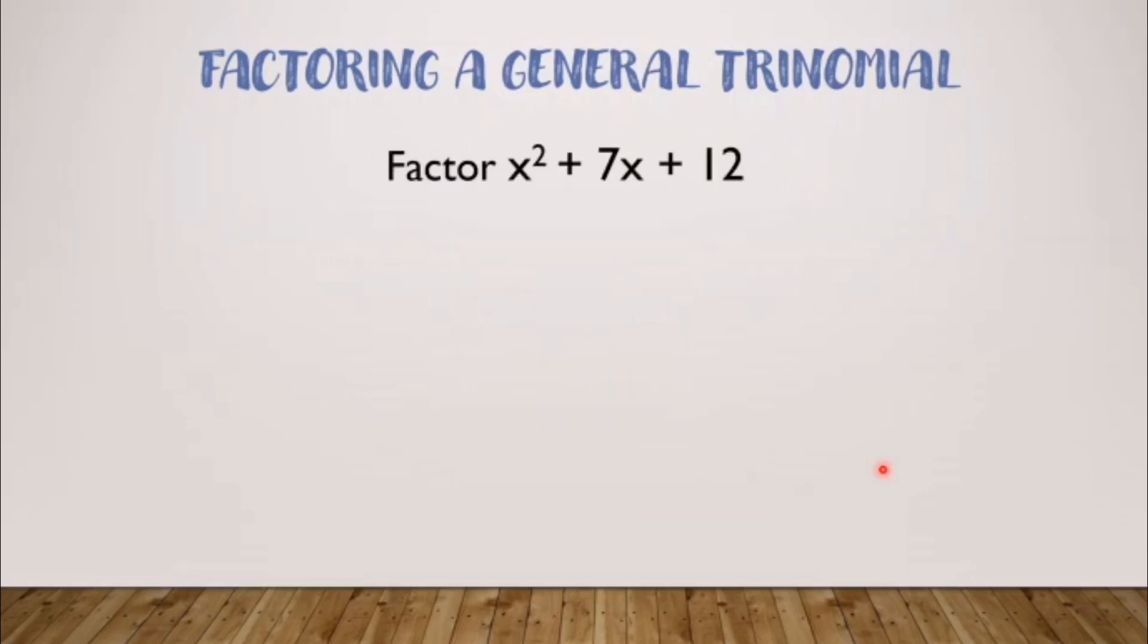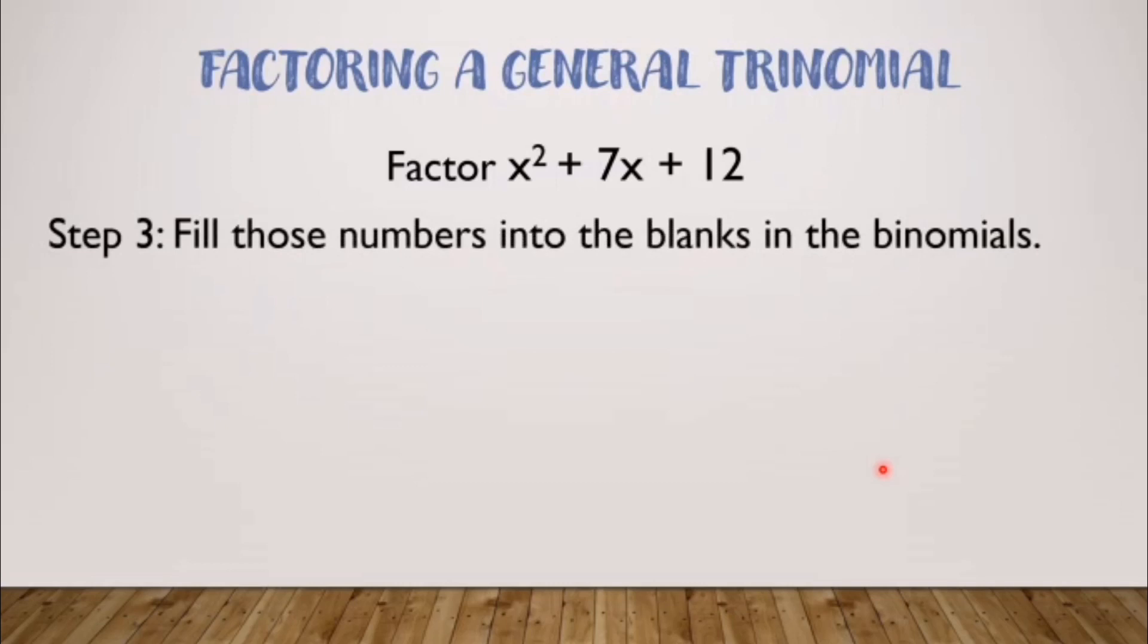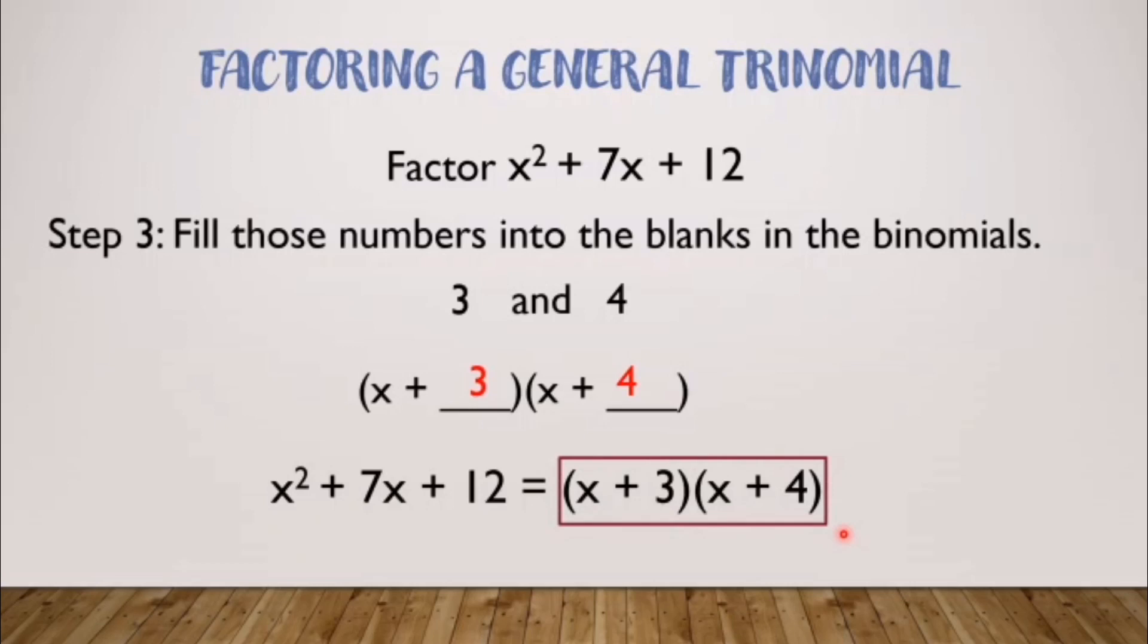That will be the basis for our step 3. In step 3, we are going to fill those numbers into the blanks in the binomials. First, we write x plus blank, x plus blank, both quantities. Then afterwards, we'll fill in 3 and 4. That gives us the final answer of x plus 3, quantity, times the quantity x plus 4. This is our final answer.